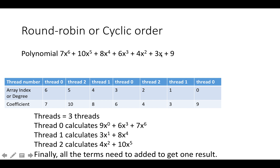Coefficient 9 is stored at index 0 (degree 0), and coefficient 3 is stored at index 1 (degree 1). Threads are assigned so the first term goes to thread 0, the second to thread 1, then thread 2 — and then thread 0 cycles back. So the pattern is 0, 1, 2, 0, 1, 2, and so on. This is called cyclic order or round-robin assignment of threads to work, where work means evaluating a term.